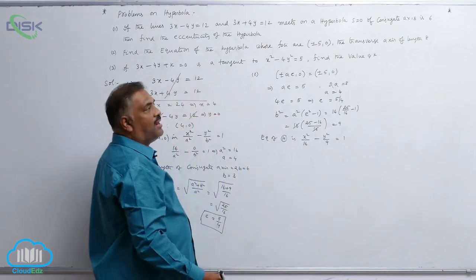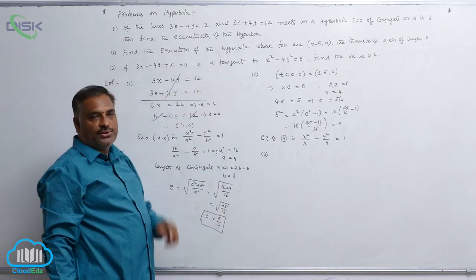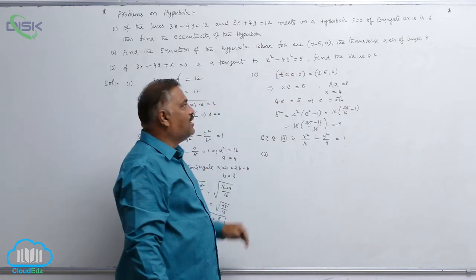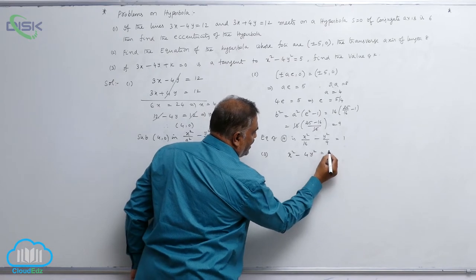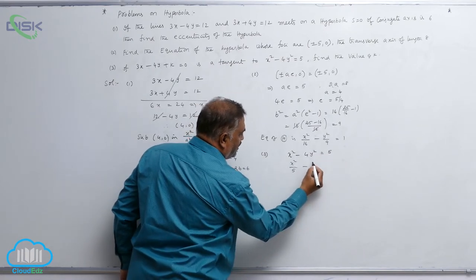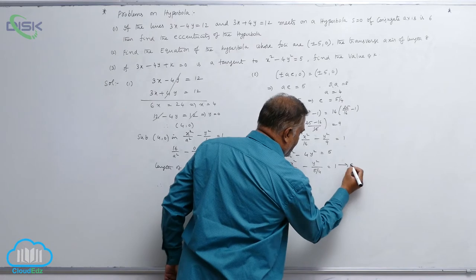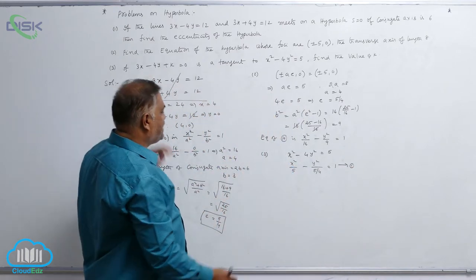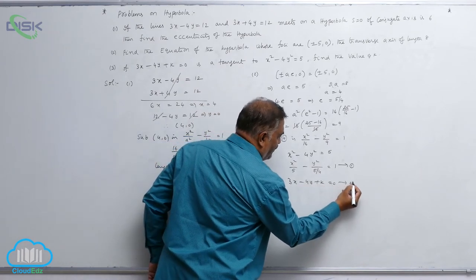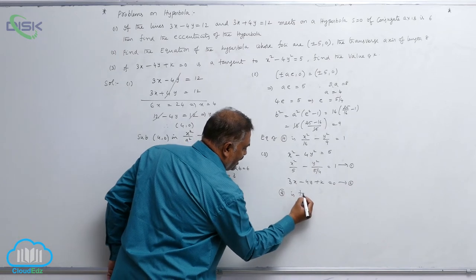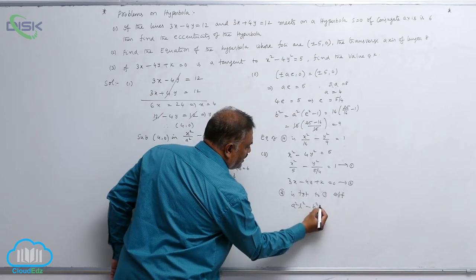Now the third question: if 3x minus 4y plus k equal to 0 is a tangent to the hyperbola, first rewrite the hyperbola x² minus 4y² equal to 5 in standard form: x² by 5 minus y² by (5/4) equal to 1, call this equation 1. The line 3x minus 4y plus k equal to 0 is equation 2. Line 2 is tangent to equation 1 if and only if a²l² minus b²m² equal to n².